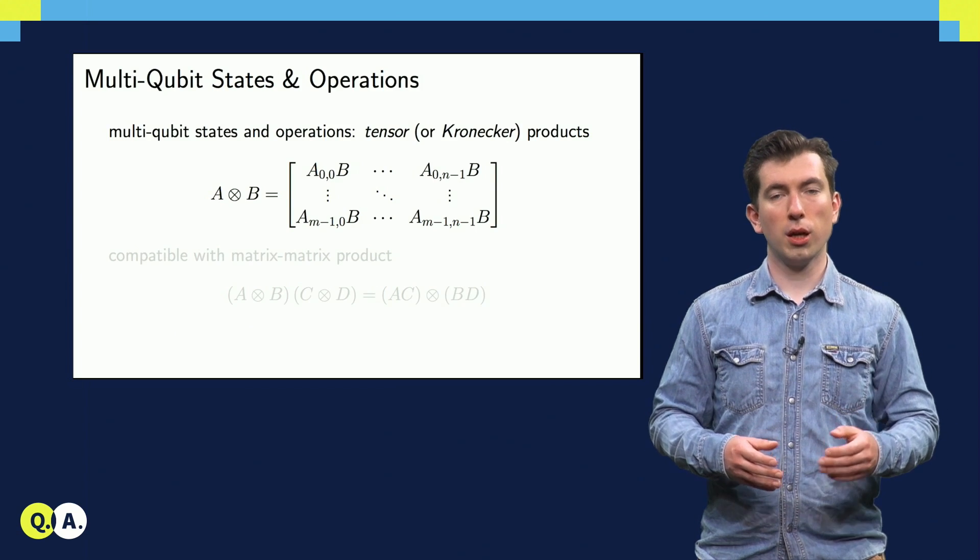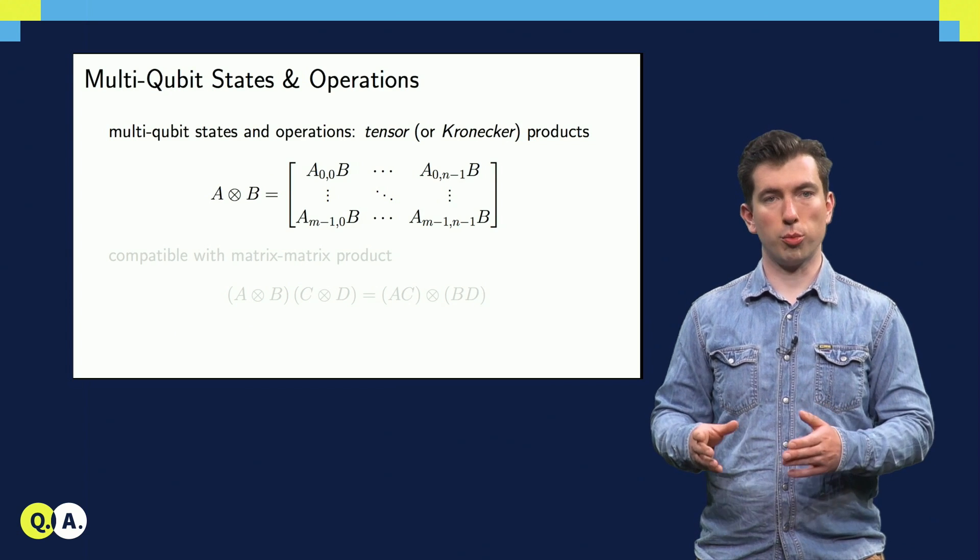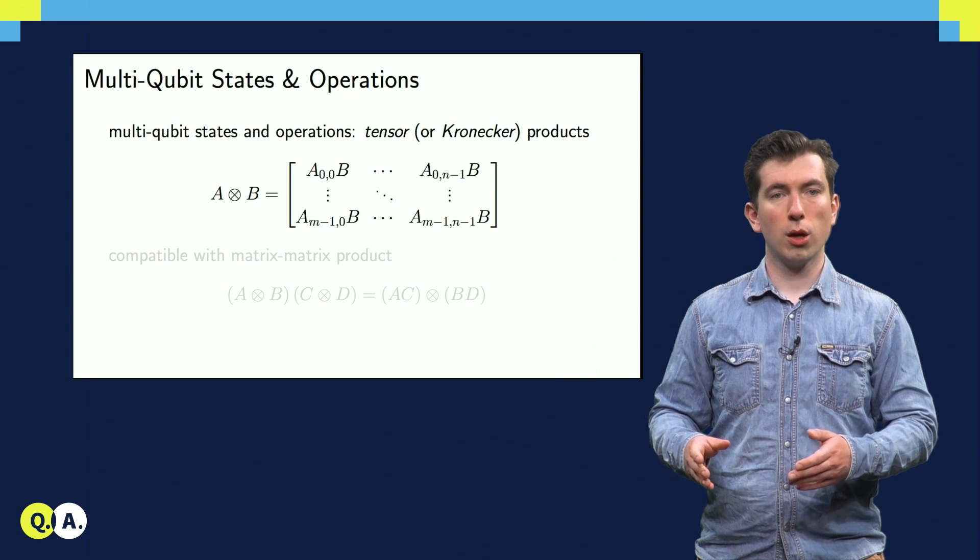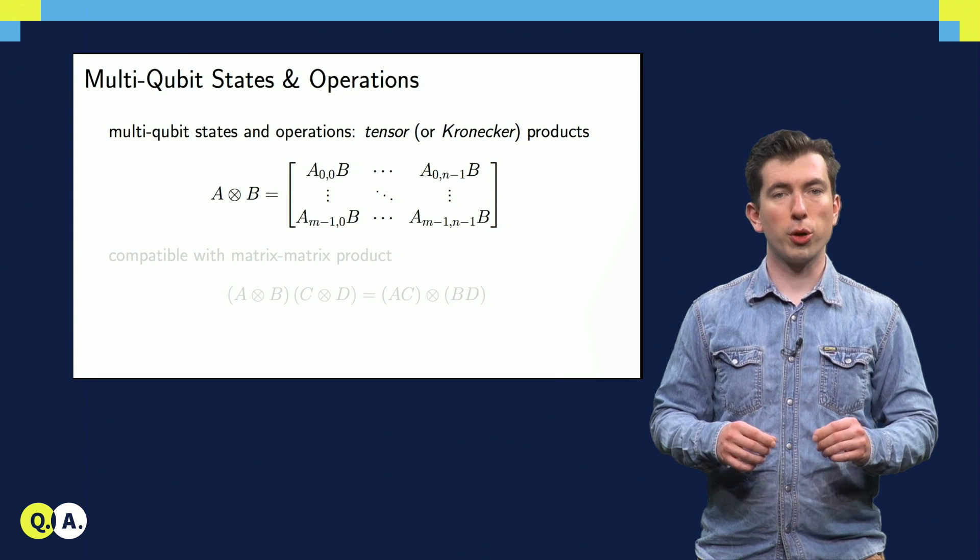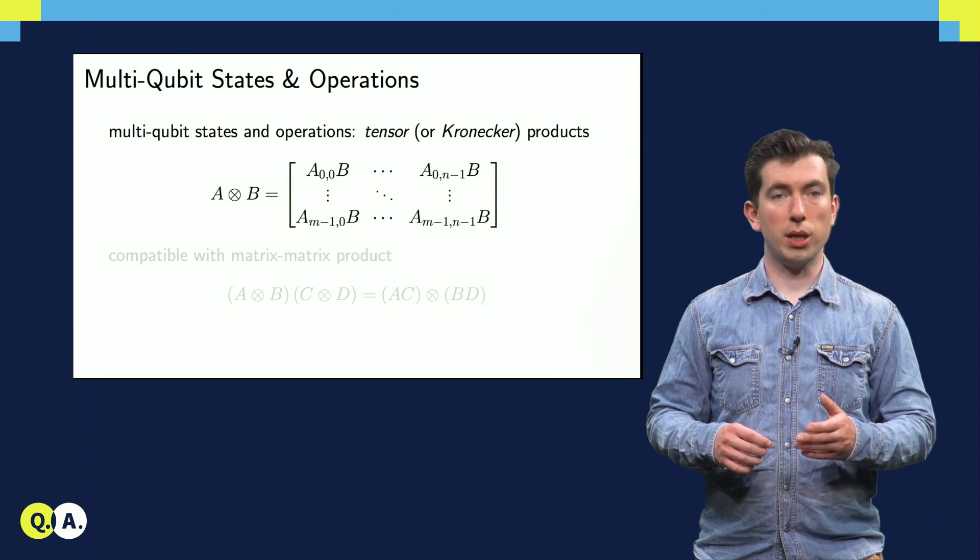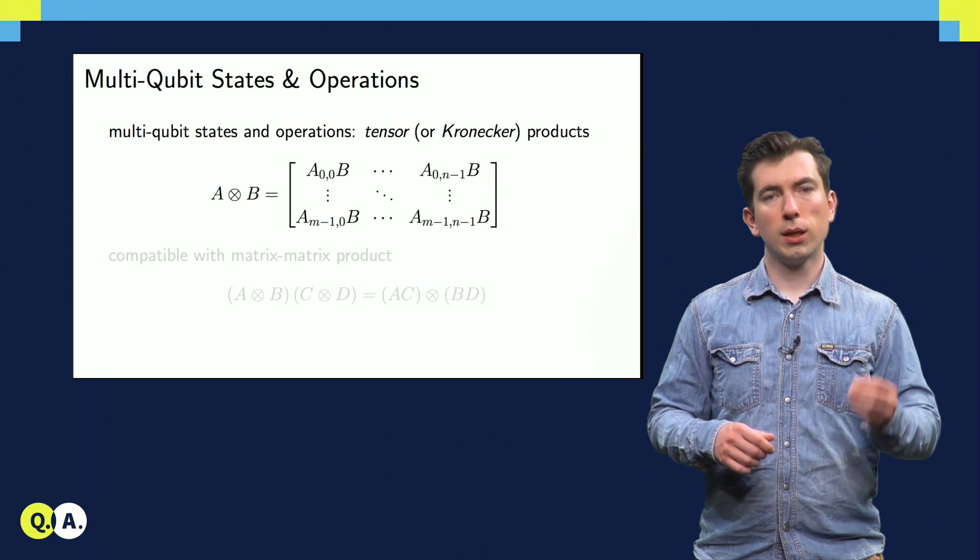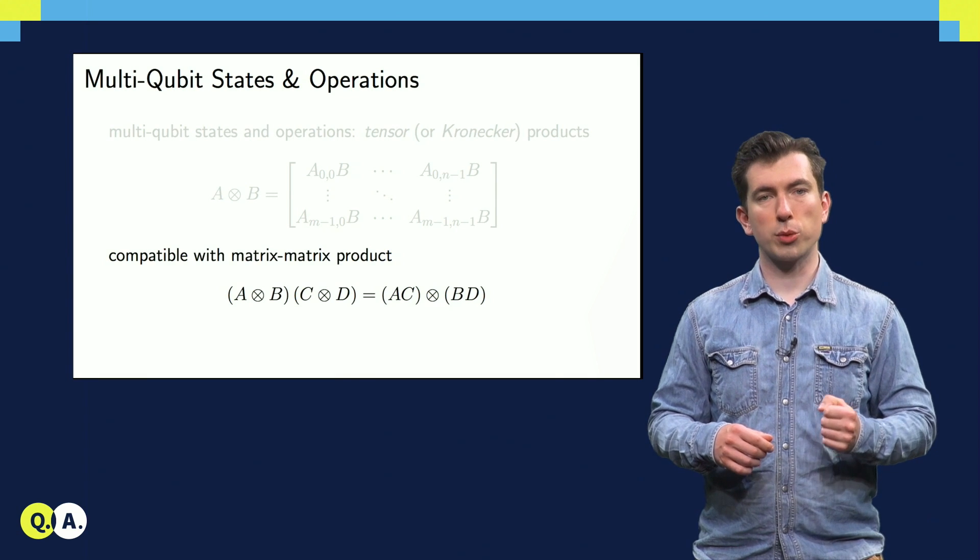To accomplish this, we use a different kind of matrix product, called the tensor product or Kronecker product. To take the tensor product of two matrices A and B, we write out a block matrix, where each block is equal to B times the appropriate element of A. The upper-left block is B times the upper-left element of A, and so on.